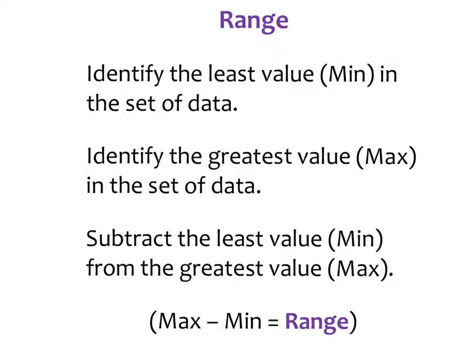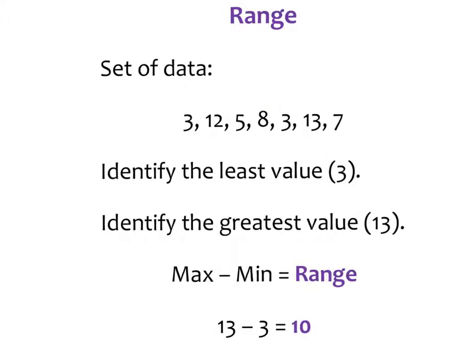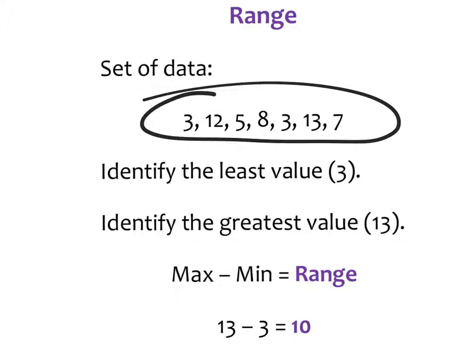Our second measure of spread is called range. To find the range, we identify the least value — the lowest number in the set — and the greatest value, the highest number in the set. We subtract the minimum from the maximum. Going back to our original example, the least value is 3 and the greatest value is 13. We subtract the minimum, 3, from the maximum, 13, and we find the data set has a range of 10.